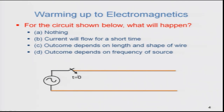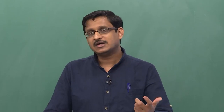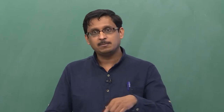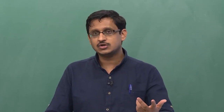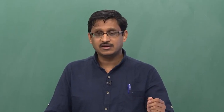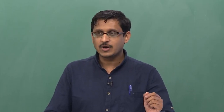Some of you might remember from physics that when you have an uncharged piece of wire and you connect a battery to it, you are charging the wire — transferring charges from the source onto the wire. So current flows for a short time, but then it has to die out because there is no complete path for circuit current to flow. Some might argue the information is insufficient without knowing the length and shape of the wire.